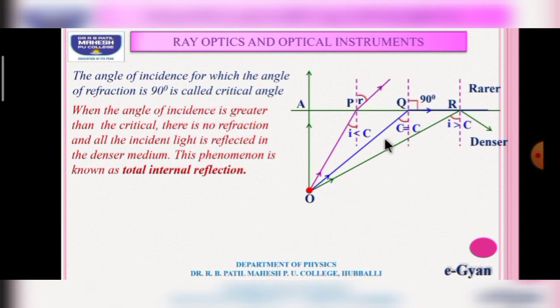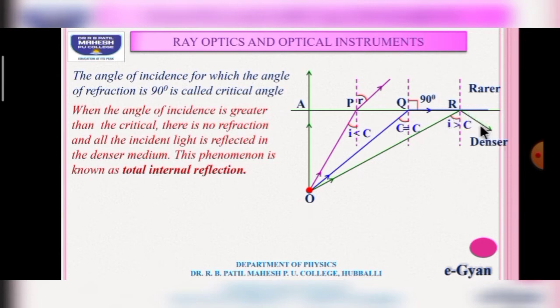When a ray is incident at the interface with an angle greater than the critical angle, there is no refraction — all the incident light is reflected back into the denser medium. This phenomenon is called total internal reflection.